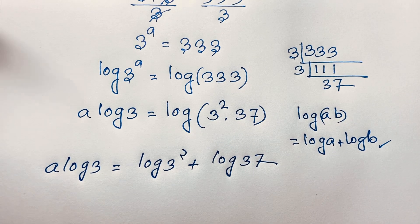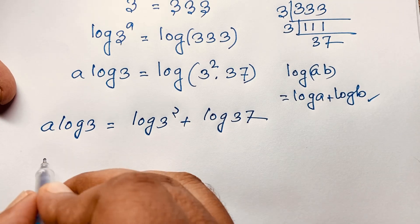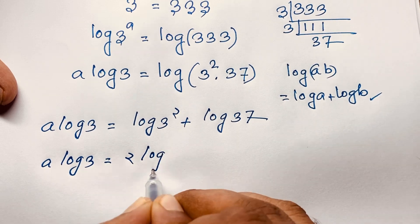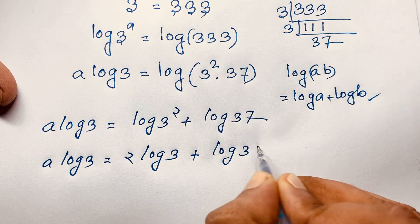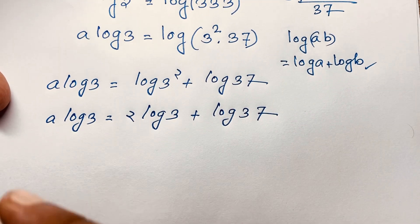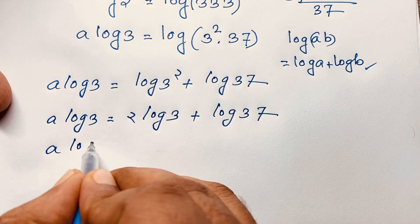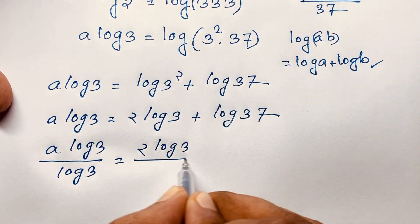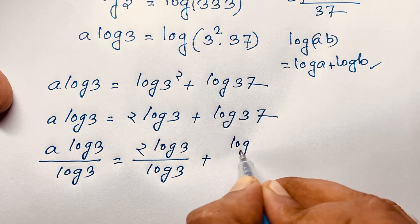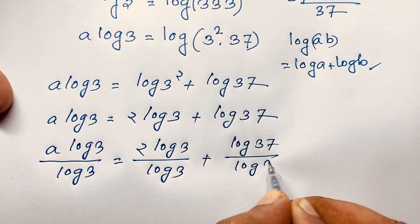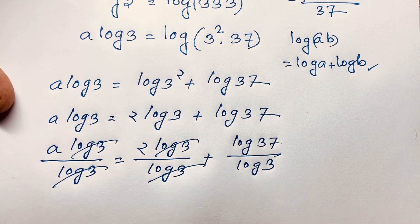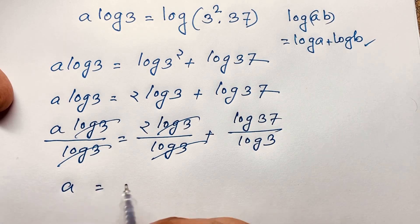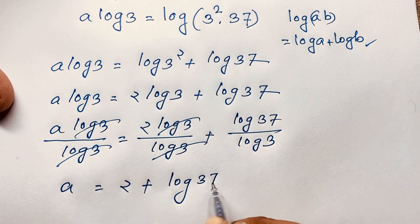Then according to the log exponent formula, this expression becomes a log 3 equals 2 log 3 plus log 37. Now I divide both sides by log 3. The log 3 terms cancel, and our final solution is a is equal to 2 plus log 37 base 3. This is our final answer in this exponential math problem.